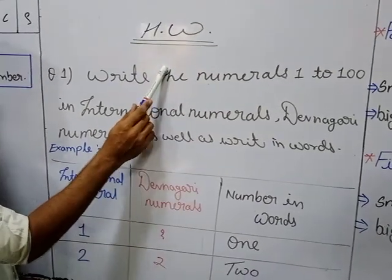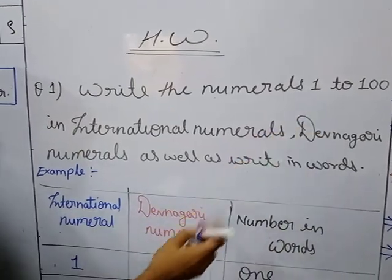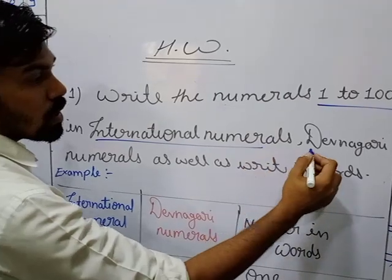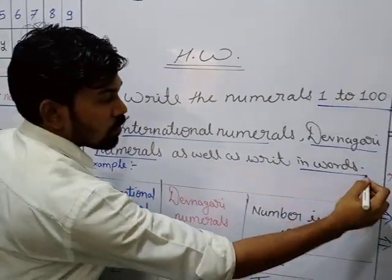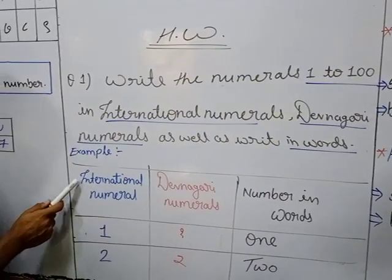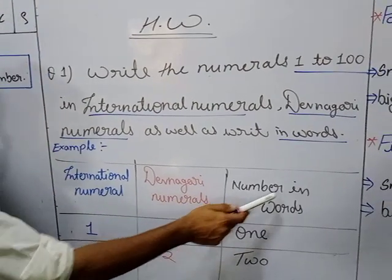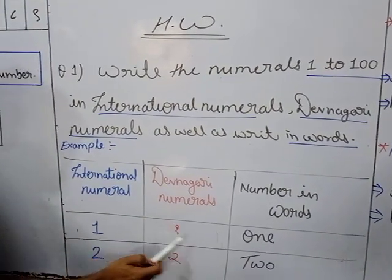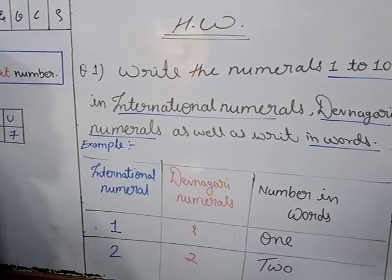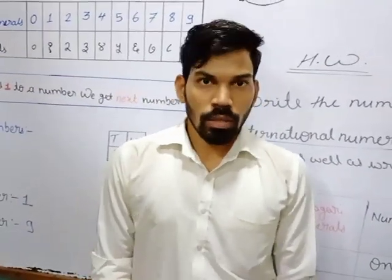This is the homework for you. Question number 1: write the numbers 1 to 100 in International Numerals, Devanagari Numerals, as well as in words. For example: 1st column — International numerals, 2nd — Devanagari numerals, 3rd — numbers in words. Like 1 is ONE, 2 is TWO. You have to carry forward till 100. The next concept we are going to learn in the next video. Thank you.